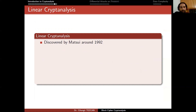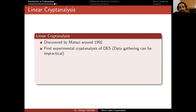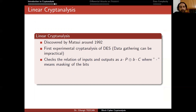Linear cryptanalysis was discovered by Matsui around 1992 and was the first experimental cryptanalysis of DES. However, data gathering can be impractical because you need a lot of data. This attack checks the relations of inputs and outputs using an inner product: A·(plaintext) XOR B·(ciphertext), where the dot means masking of the bits.